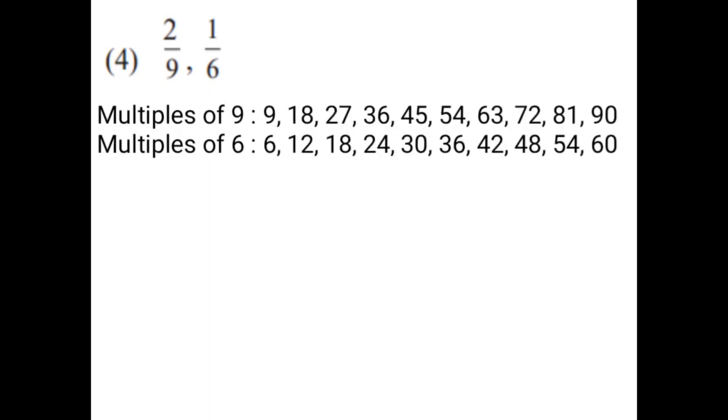2 upon 9, 1 upon 6. You have to write the multiples of both the denominators, that is 9 and 6. When you are writing the multiples of 9 and 6, you have to write the tables — multiples of 9 and multiples of 6. The first common multiple that appears, you have to underline it. The lowest common multiple of 9 and 6 is 18.